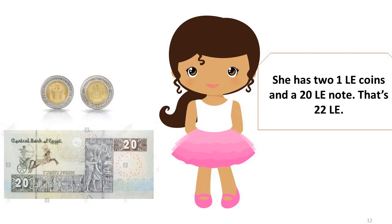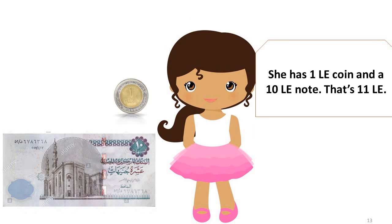She has two one-pound coins and a twenty-pound note. That's twenty-two pounds. She has one one-pound coin and a ten-pound note. That's eleven pounds.